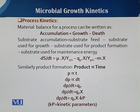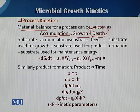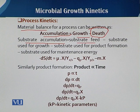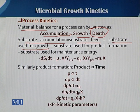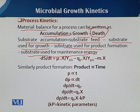Concerning the process kinetics, the material balance for a process during fermentation can be written as follows. The overall accumulation is equal to growth minus the death of the cells. In detail, the substrate accumulation equals the substrate fed in, minus the amount of substrate used for growth, minus the substrate used for product formation. Some fermentations involve biotransformation in which substrate is directly converted into product, and some substrate is also used for maintenance energy.